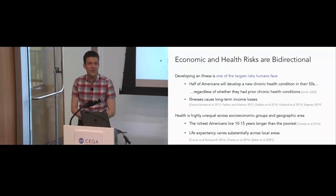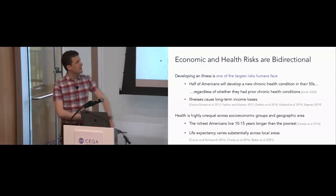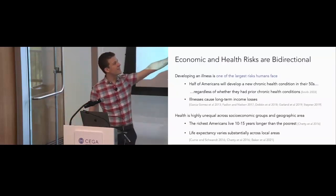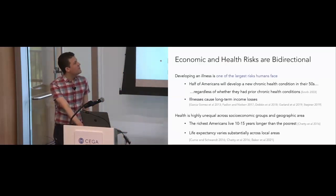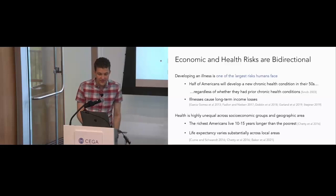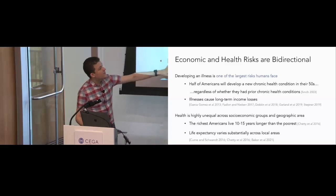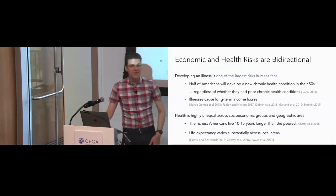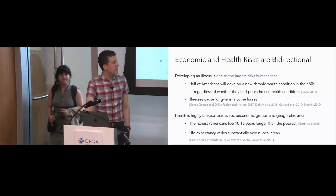Illnesses cause long-term income losses, documented not just in the U.S., but in the Netherlands, Denmark, and Canada. Not only is health a source of economic risk, but health is also highly unequal across socioeconomic groups and geographic areas. In work that I've done, we documented that the richest Americans — people in the top 1% of the income distribution — are living 10 to 15 years longer than the poorest Americans.